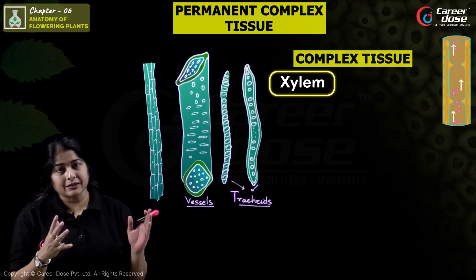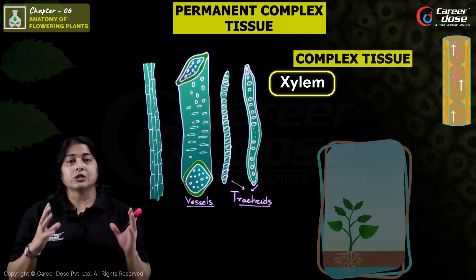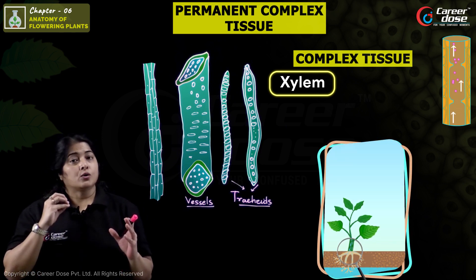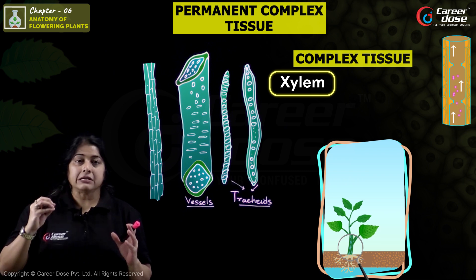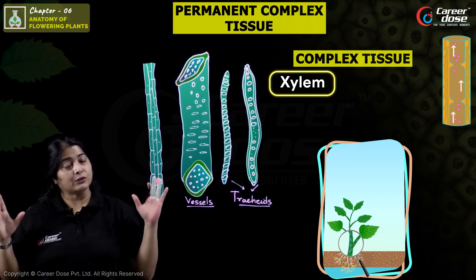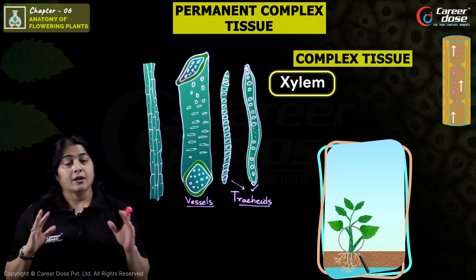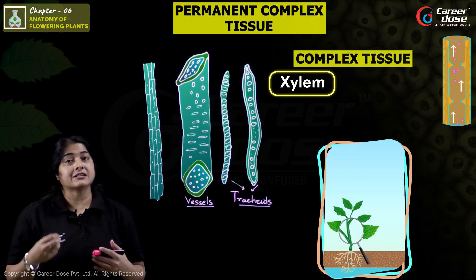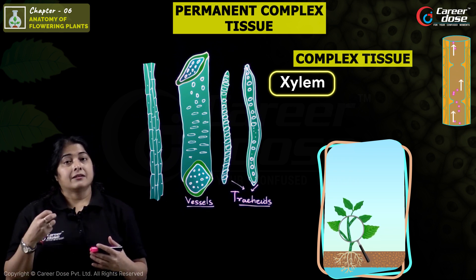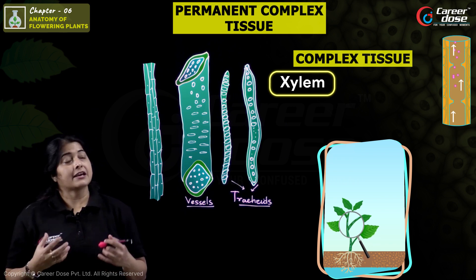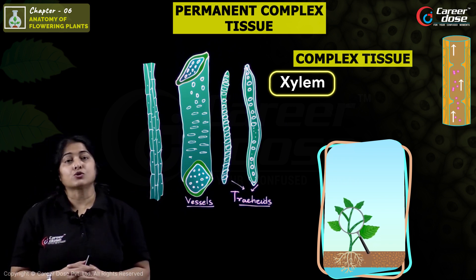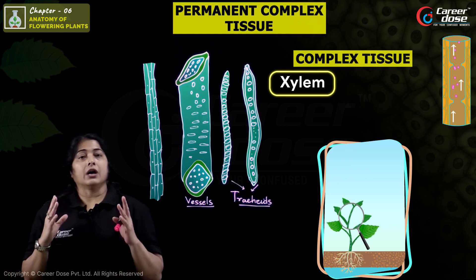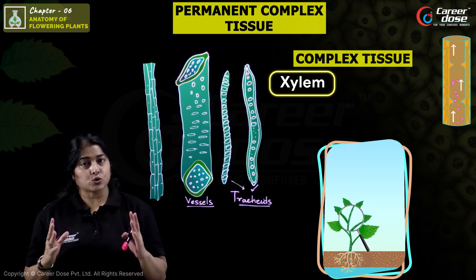Let's talk about Xylem first. Xylem is a tissue in plants responsible for conducting water and minerals from the roots and distributing them throughout the entire plant body, so that each and every cell receives water.